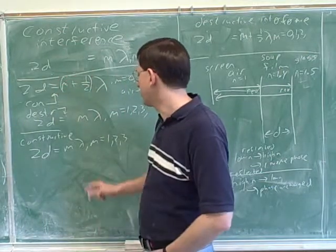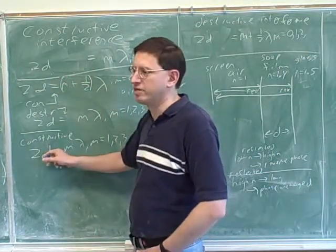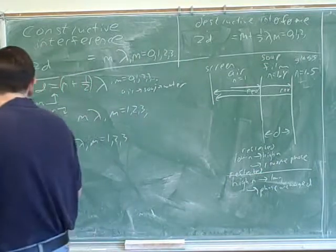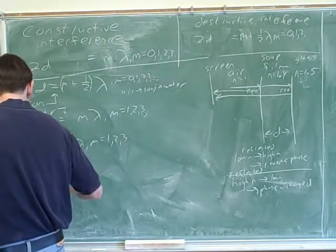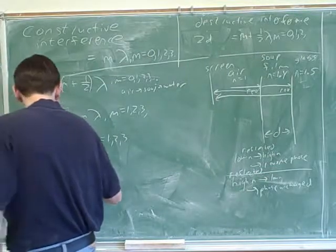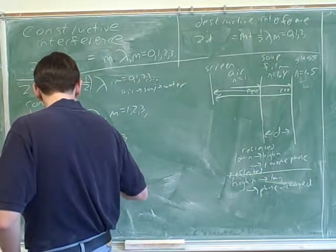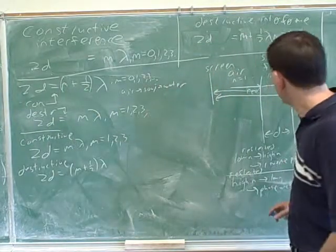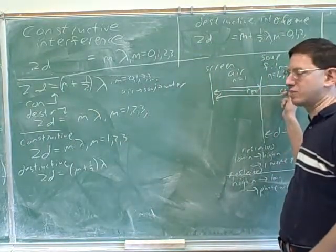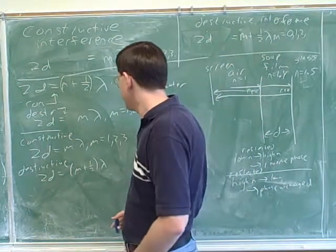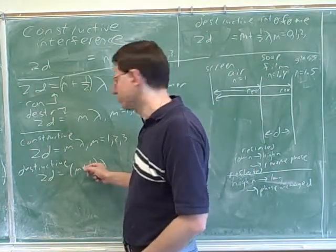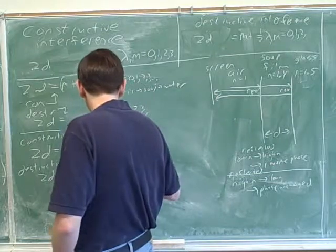Again, it doesn't make sense to put in m equals zero here because that would imply that the film has no length. Alright. So now let's figure out the destructive equation. What is it plus one half? Because again, the reversals are still keeping them in phase. The reversals are keeping them in phase and then you're going to mess that up if one of the waves goes half a wavelength longer than the other.